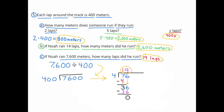C. If Noah ran 7,600 meters, how many laps did he run? 7,600 divided by 400 is the same as 76 divided by 4, since both values are made 100 times smaller. 76 divided by 4 is 19, so 7,600 divided by 400 is also 19. Noah ran 19 laps.